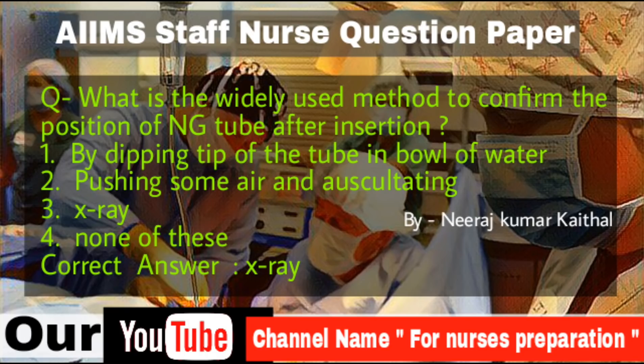Question: What is the widely used method to confirm the position of a nasogastric tube after insertion? Options: By dipping the tip of the tube in a bowl of water, Pushing some air and auscultating, X-ray, None of these. Correct answer is X-ray.